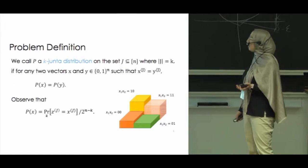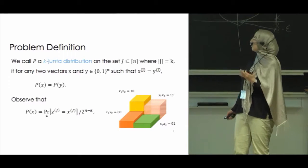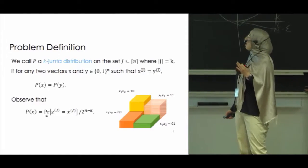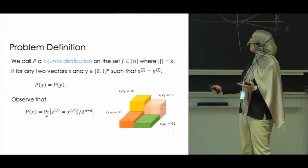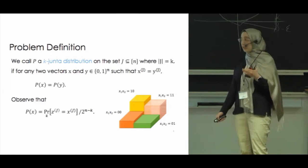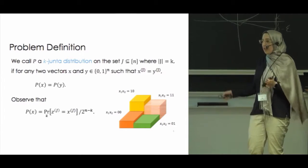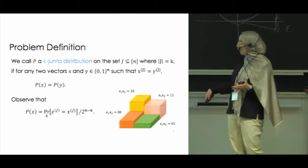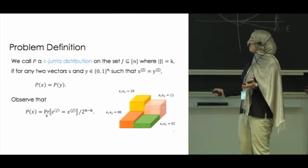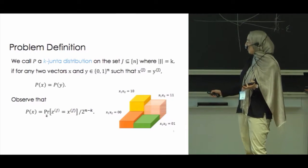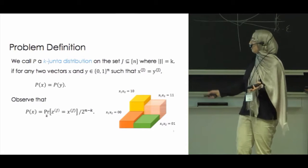If I define the problem formally, I'm going to call a distribution a k-junta distribution if there exists a subset of coordinates J of size k such that for any two vectors x and y, if they agree on the coordinates in J, then the probability of x and y are equal — basically, if they are in the same chunk, they have the same probability. Another way of defining this is that for any vector x, the probability of x is the probability of falling in that specific chunk divided by the number of elements in that chunk, since it is uniform.